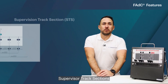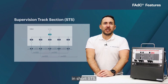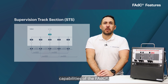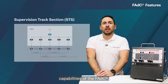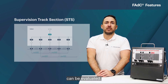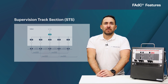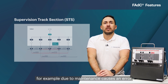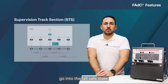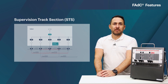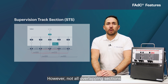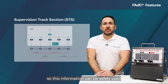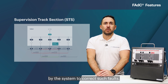The second feature is called Supervisor Track Sections, in short STS. Due to the flexibility and internal communication capabilities of the FADC, virtual overlaying track sections can be evaluated. If an external disturbance, for example due to maintenance, causes an error, multiple track sections will go into the failsafe state. However, not all overlapping sections are usually impacted, so this information can be safely used by the system to correct such faults.